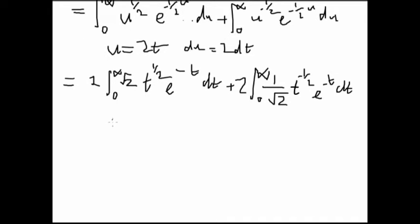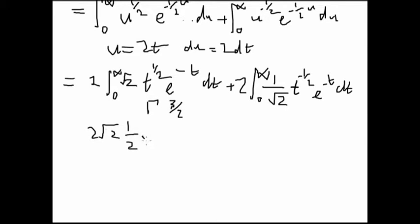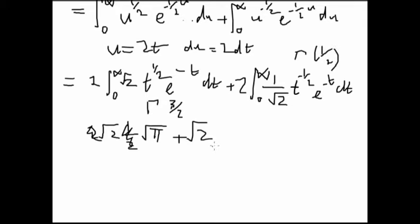Using the gamma integral, the first term is 2√2 times Γ(3/2), which equals (1/2)Γ(1/2). Γ(1/2) is √π, so we're left with √(2π). The second part: we cancel and write √2 times Γ(1/2), which is also √π. Hence the answer is √(2π).